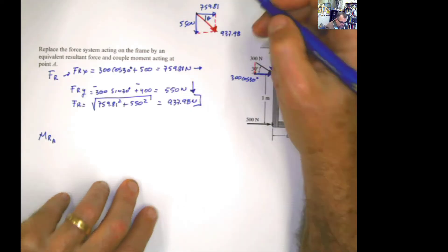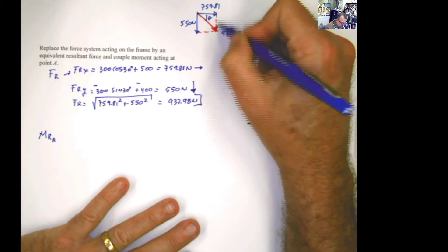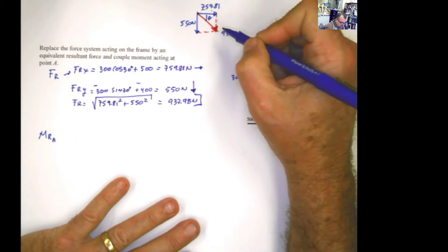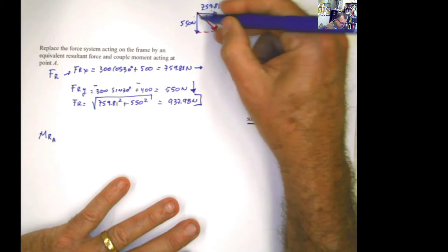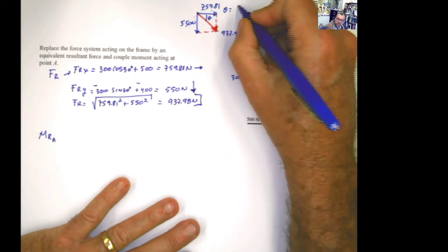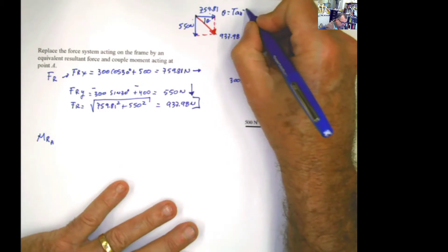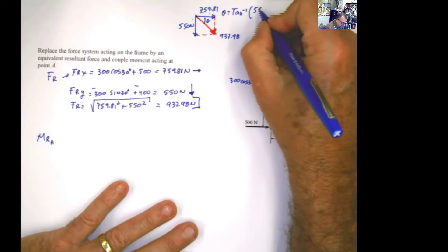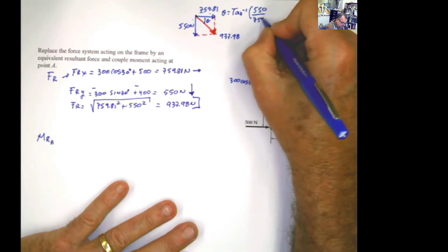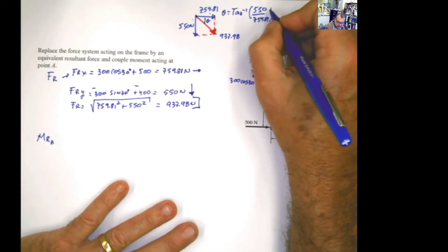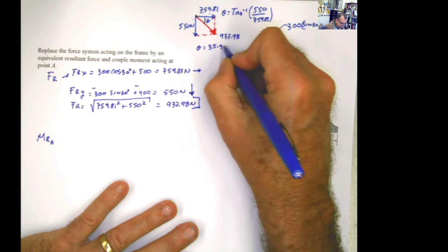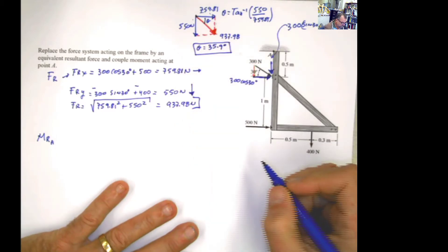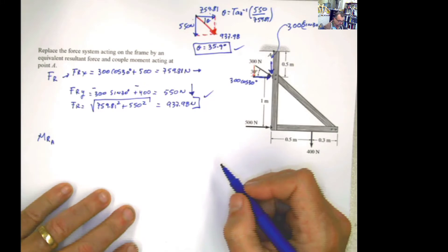To calculate the direction angle, you can use any trigonometric property — inverse tangent of 550 divided by 759.81, or inverse cosine or inverse sine using the appropriate sides. Using inverse tangent of the y component 550 divided by 759.81 gives an angle of 35.9 degrees. That completes the first part of the question — we have found the resultant force and its direction.